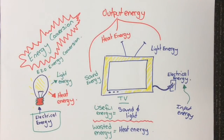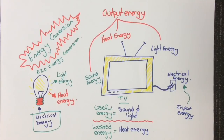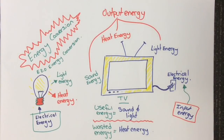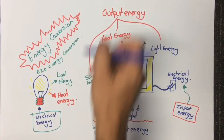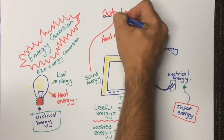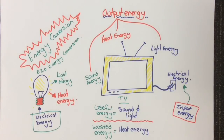OK, so let's sum it up. Devices can convert energy from one form to another so that they can perform the function they were designed for — think of a TV. Input energy is the energy that goes into the device and it uses it to produce something. Output energy is the energy that is given out by the device, and output energy can be useful or wasted.